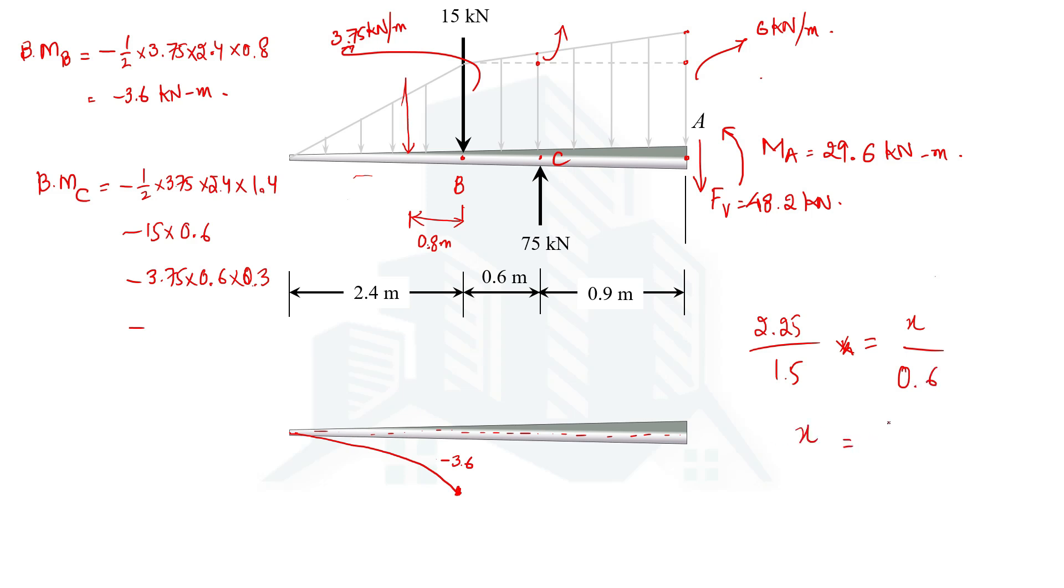From here you will have x as, so the intensity would be exactly 0.9 kilonewtons per meter. Hence we can write half times 0.9 multiplied by 0.6. That will be acting at 1/3 of 0.6 which will be 0.2. If you solve this we are going to get the value as minus 16 kilonewton-meters.